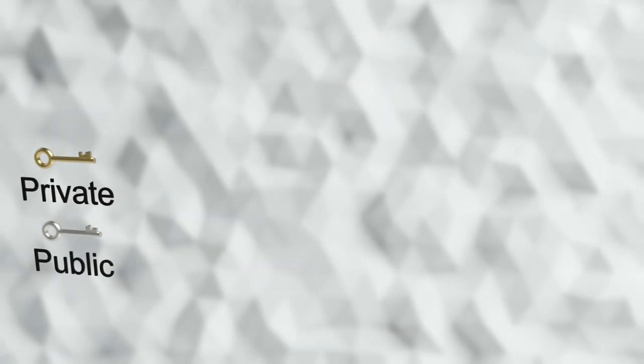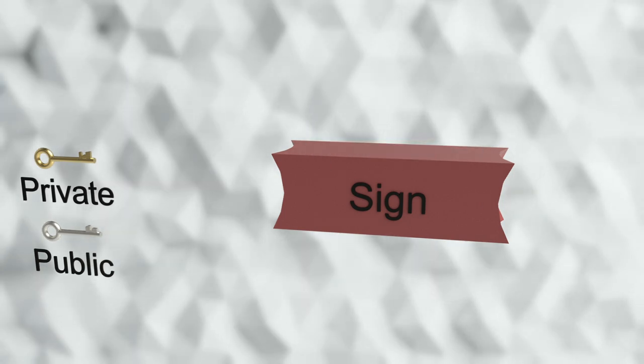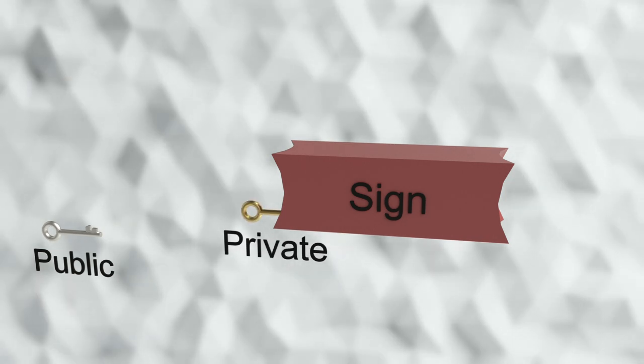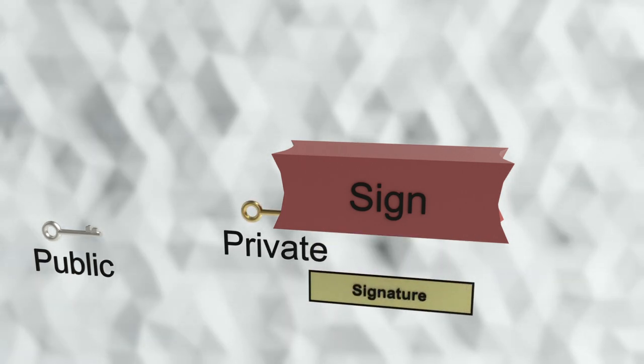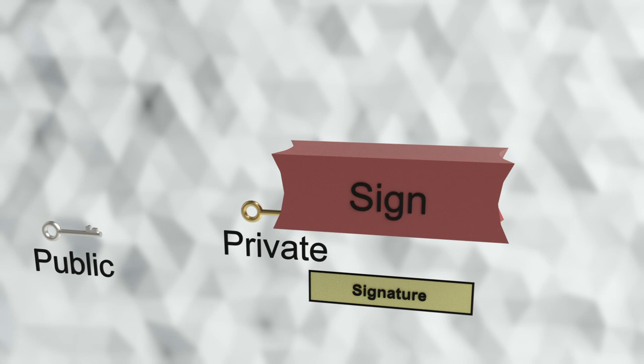Along with this key pair, the digital signature algorithm will also define two operations. The first operation, called sign, takes the private key and a small block of data known as the message, and produces a digital signature. Note that in this case, the message is not the whole image, but a small summary of it, the output of the hash function.